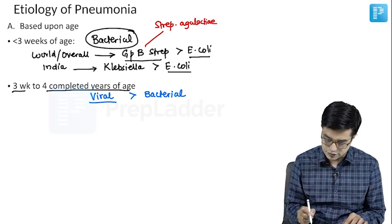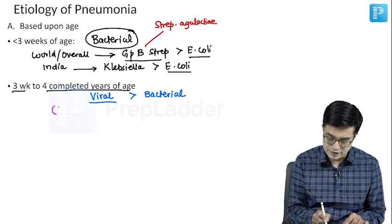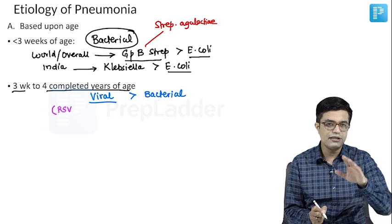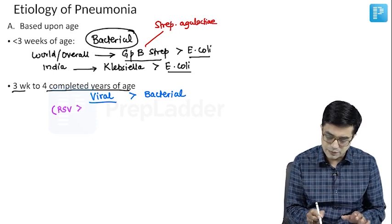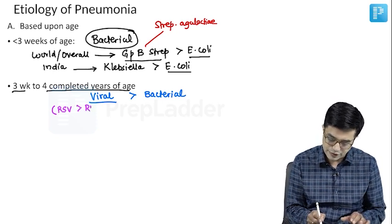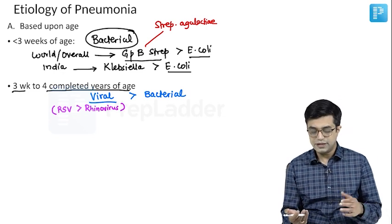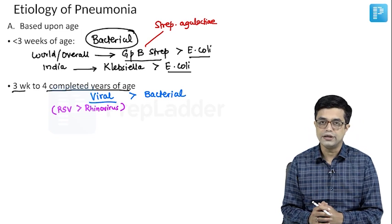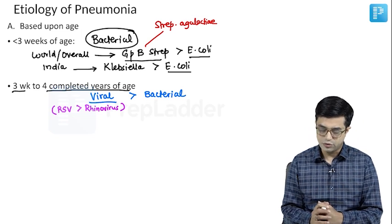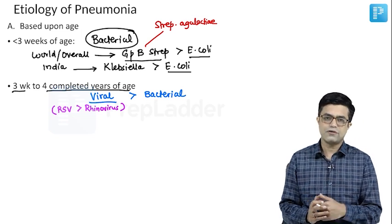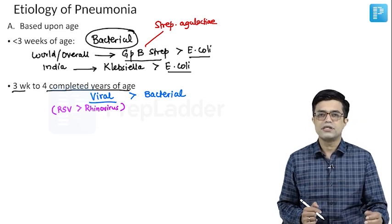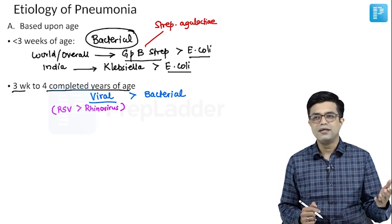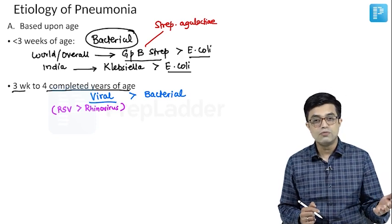Which is the most common viral cause? It is Respiratory Syncytial Virus (RSV), which is most common especially in the first two years of age, followed by rhinovirus. Rhinovirus commonly causes the common cold but is also a common cause of pneumonia in children. So RSV followed by rhinovirus, and of course there can be other viral causes like influenza, parainfluenza, and human metapneumovirus.